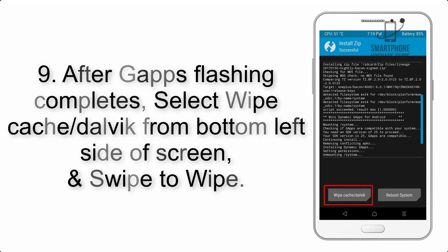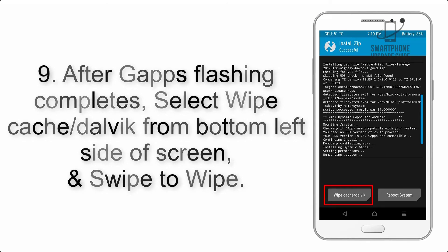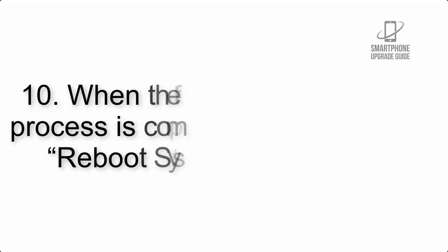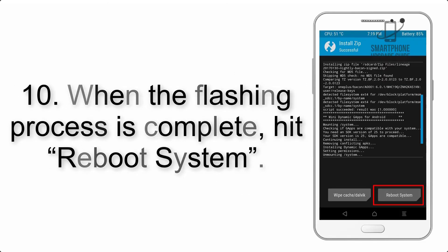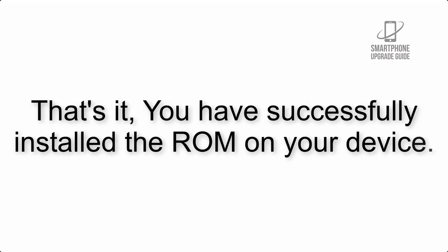Step 9: After GApps flashing completes, select Wipe Cache and Dalvik from the bottom left side of the screen and swipe to wipe. Step 10: When the flashing process is complete, hit Reboot System. That's it — you have successfully installed the ROM on your device.